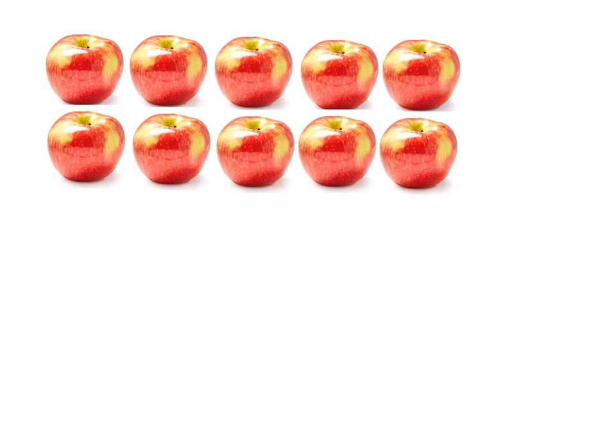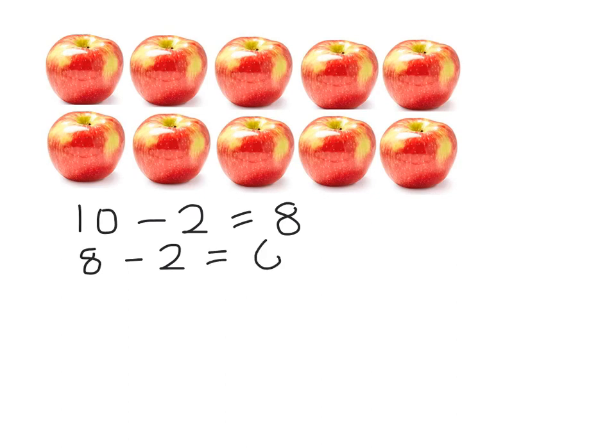Let's look at that same problem again — ten apples shared amongst two people. Another way I could work this out is by using repeated subtraction. That means I am just going to keep subtracting. So I am going to start with ten apples, and because I am sharing them amongst two people, I am going to take away two. Ten take away two equals eight. Now I'm going to go eight apples, take away another two equals six.